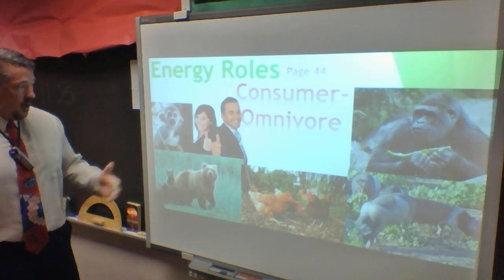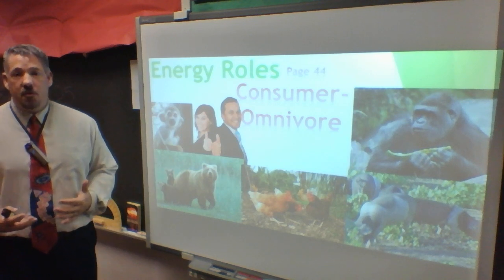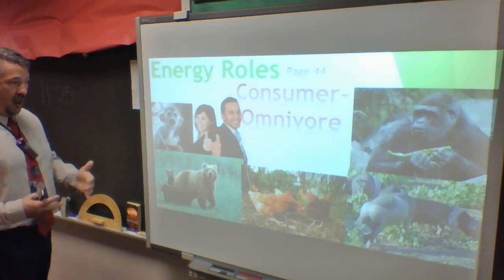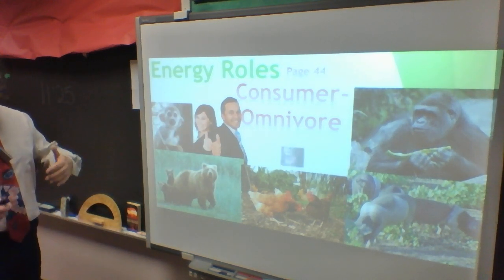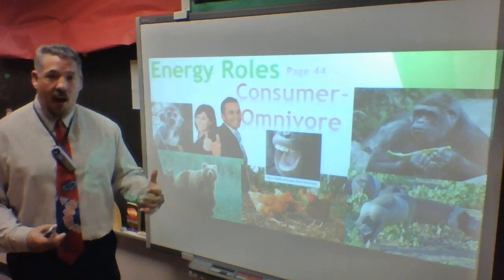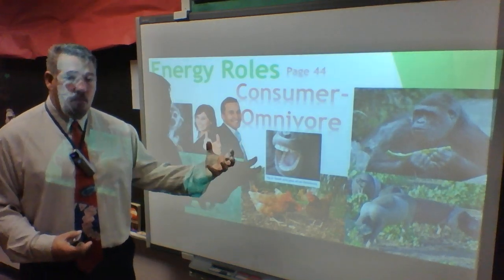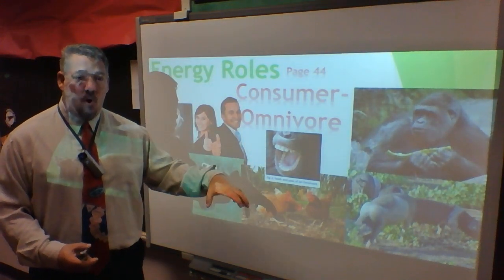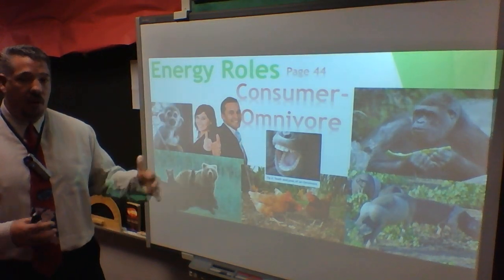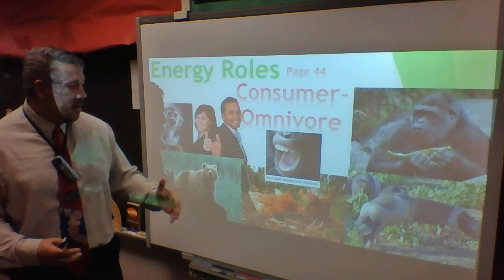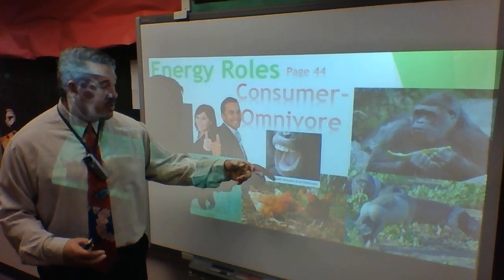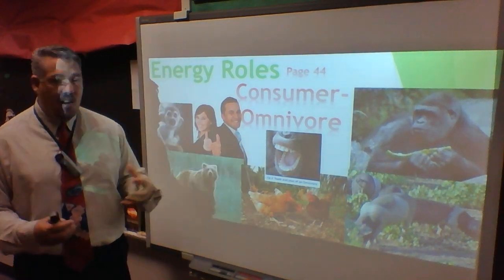At the top of the omnivore category are humans. We have sets of teeth designed for both plant and animal diets: large molars to grind plant material, incisors to cut, and canines to tear. We can eat whatever we choose to eat.